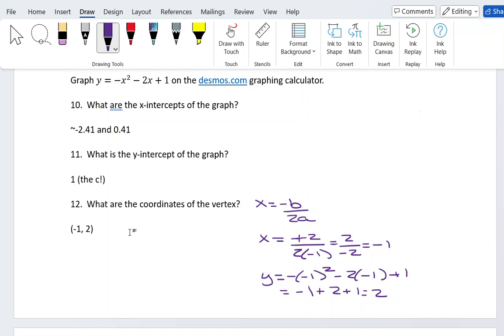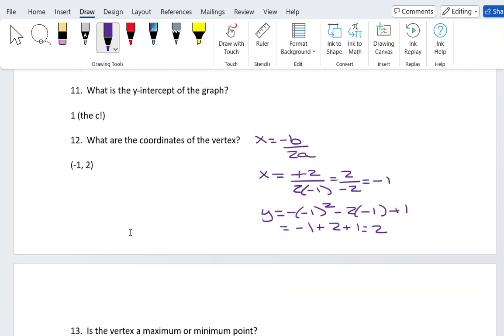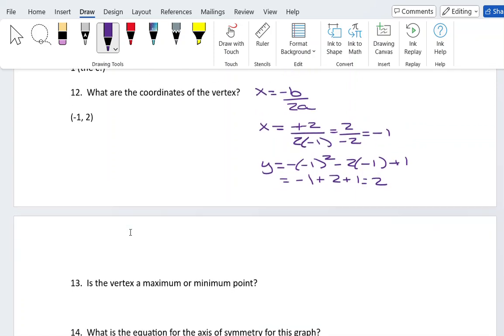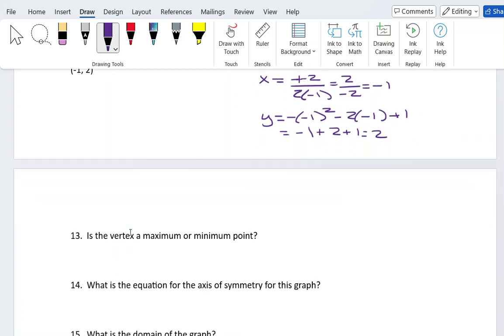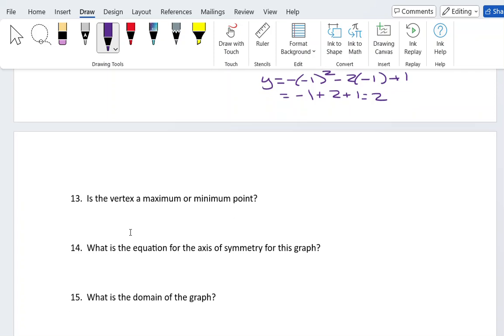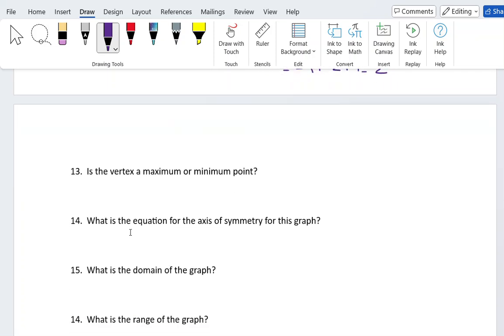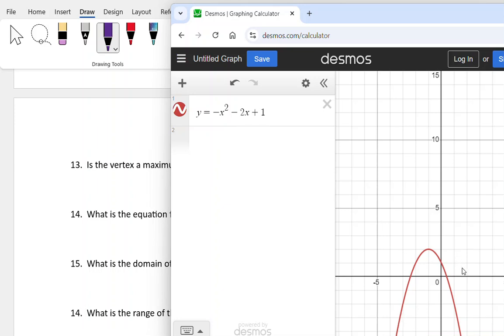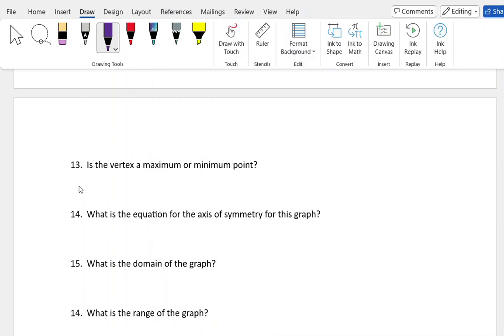So we get the same thing doing it this way that we get by just looking at the graph on Desmos and clicking on the point. Either way is fine. You will need the vertex in order to graph the problem in MyLab, which we'll talk about in the next video. Is the vertex a maximum or minimum point? I can tell from my graph that this parabola is opening downward, so my vertex is a maximum point—it's the highest point on the graph.